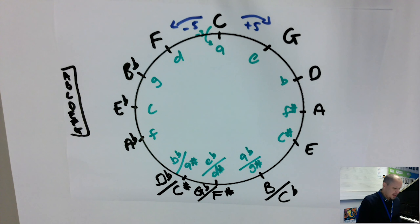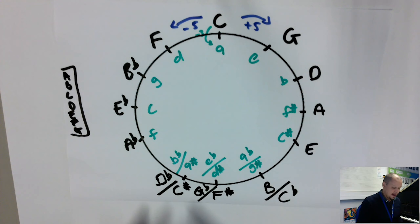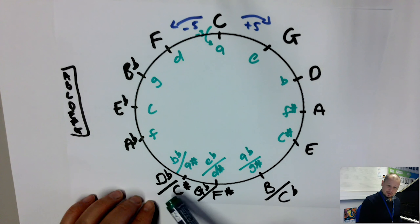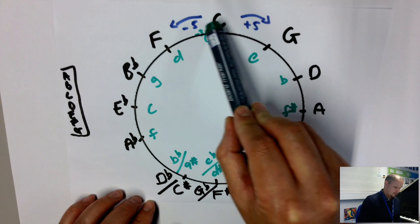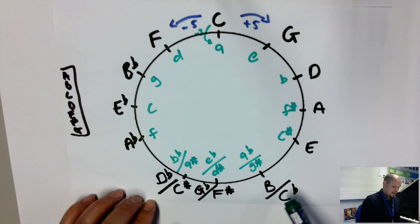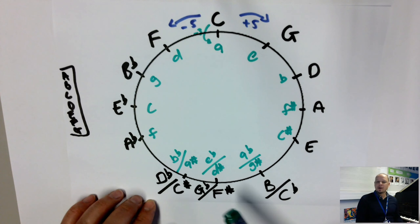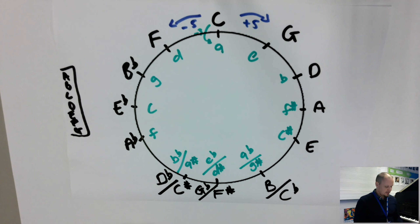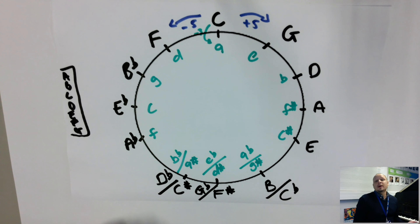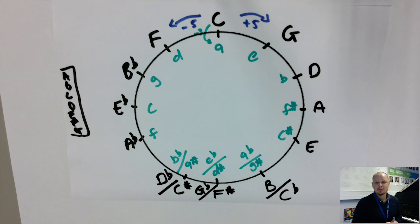That is your circle of fifths. If you go clockwise, count up five and that gets you to your seven keys with sharps. Going counterclockwise, down five, gets you to seven keys with flats. At the bottom we have enharmonic keys — D flat and C sharp are the exact same note, as are G flat and F sharp. Do understand that they are two different keys: six sharps is F sharp major, not G flat major, although they sound exactly the same.